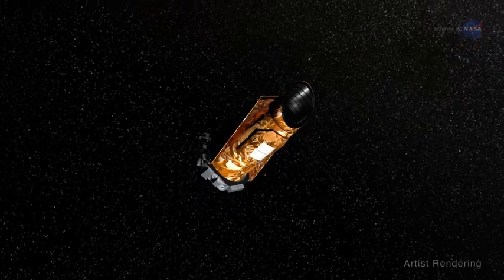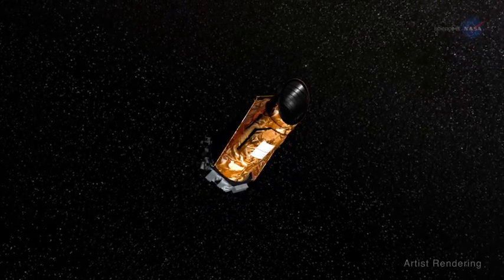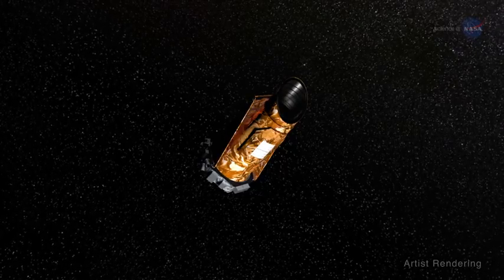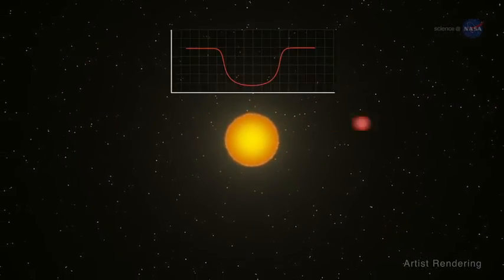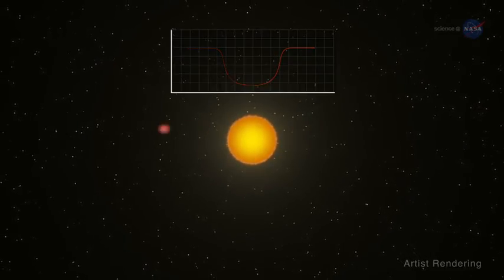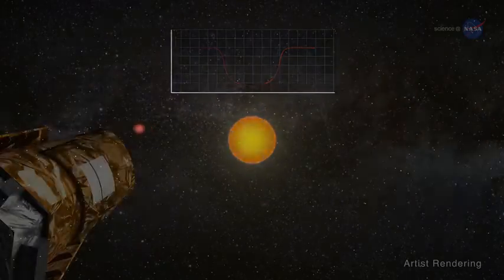Kepler is famous for finding planets, but researchers using this space-based observatory also learn a lot about stars. Kepler routinely surveys thousands of stars, looking for slight variations in brightness that signal the transit of a planet across the stellar surface. For each star in the survey, Kepler collects a long-term record of the star's brightness, a record that can be used for astro-seismology.